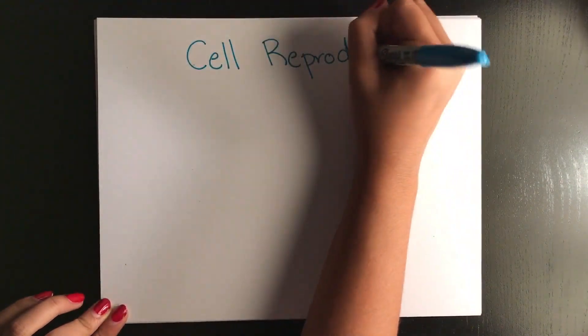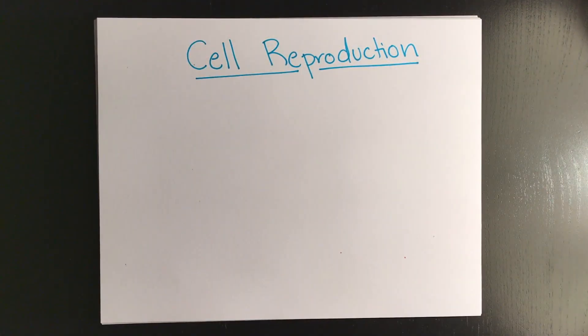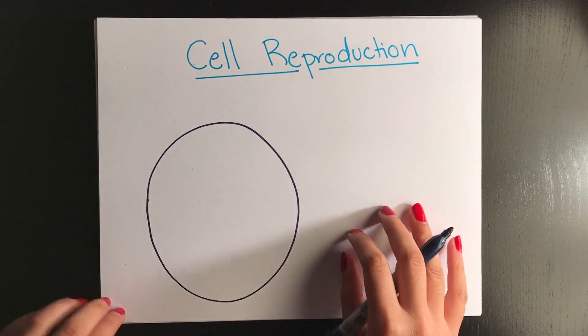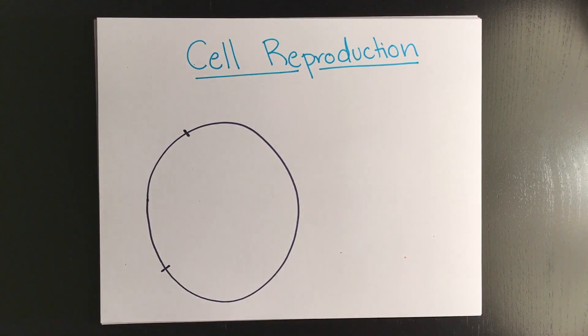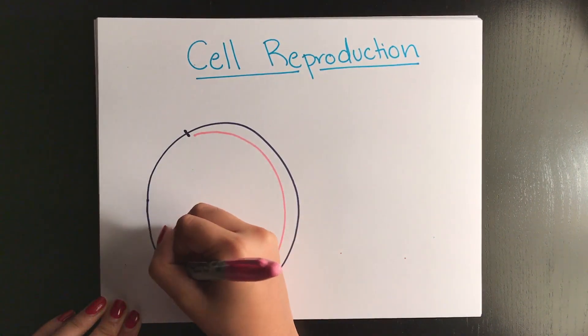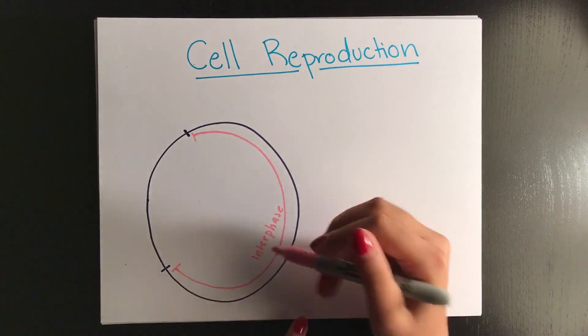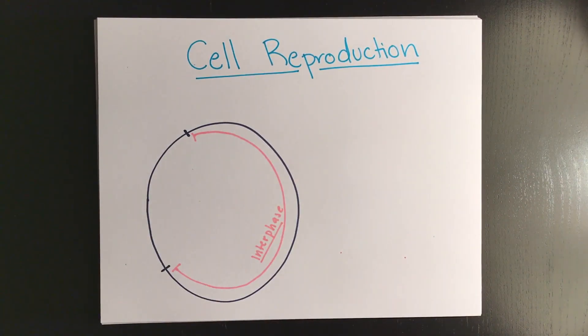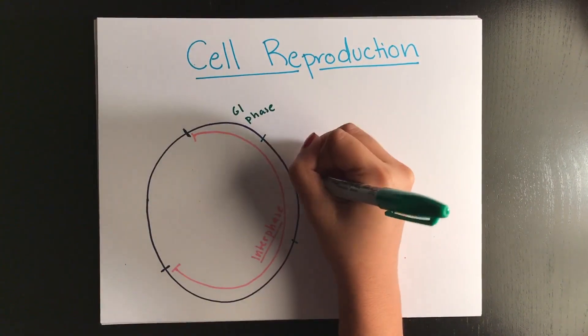Before a cell undergoes any type of cell division, every chromosome needs to replicate itself. When we talk about the cell cycle, we have interphase, which is the first and longest portion of the cell cycle. During this phase, chromosomes are duplicated and the cell continues to perform normal functions.